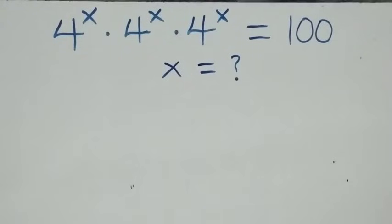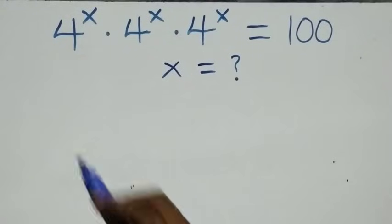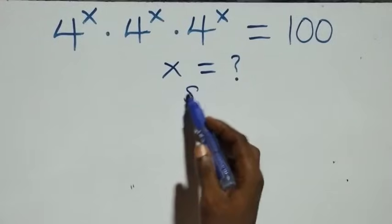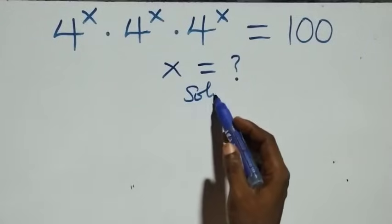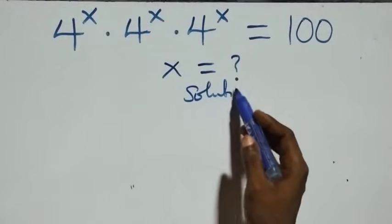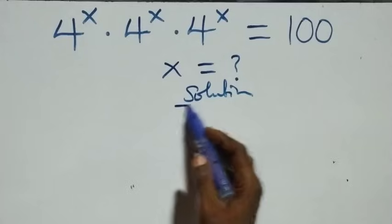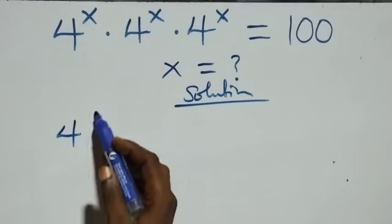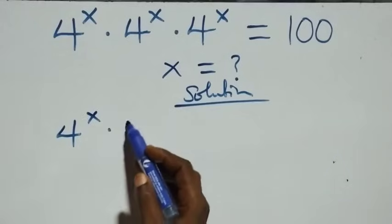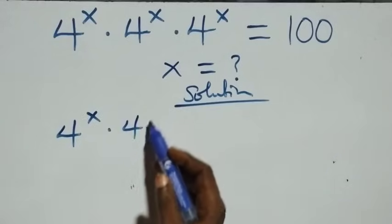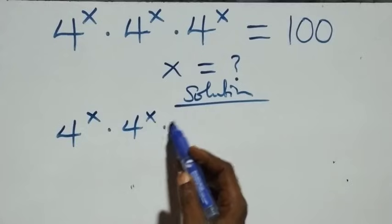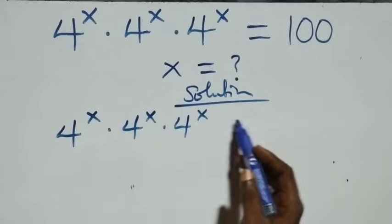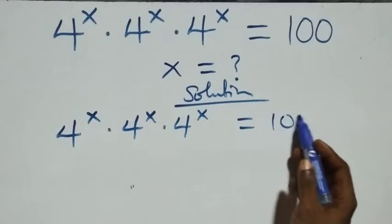Hello, you are welcome. We are going to solve this nice exponential equation. What we have here is 4 raised to power x, times 4 raised to power x, times 4 raised to power x, equals to 100.